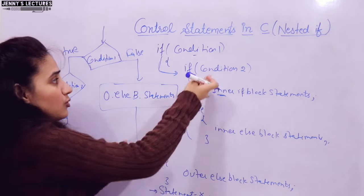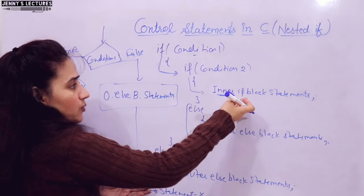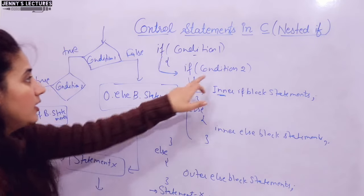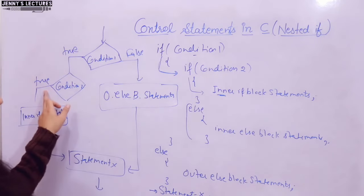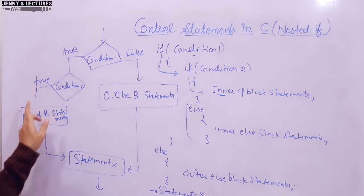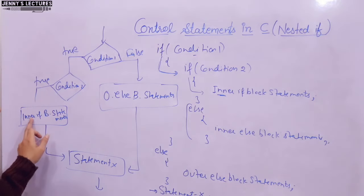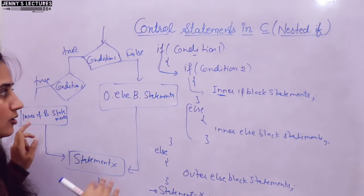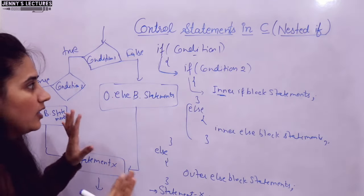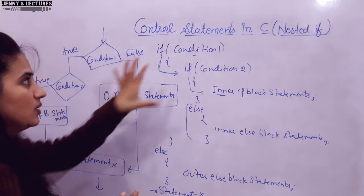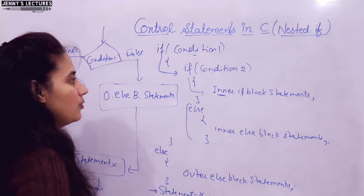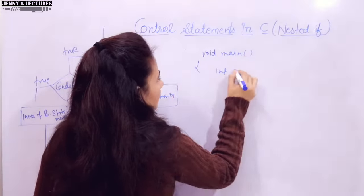If there is one more condition — say condition 3 nested inside — if condition 2 is true, condition 3 would be checked next. I think you now have a clear idea of the flowchart and the working of nested if. So let me write a program.